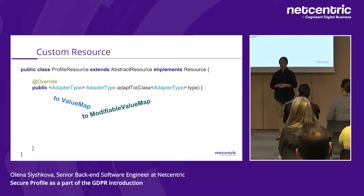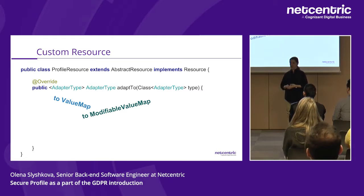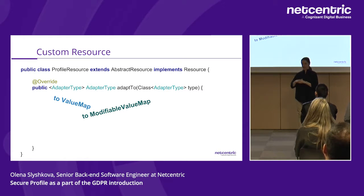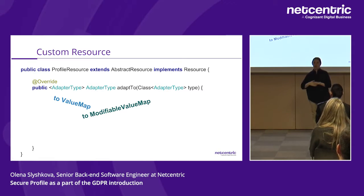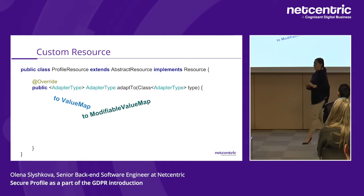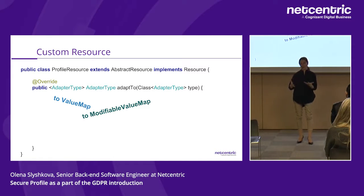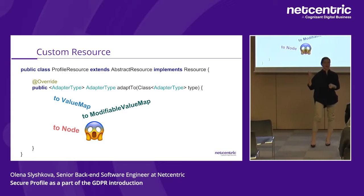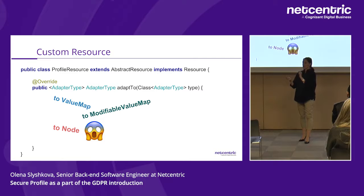The challenge lies in the adaptTo methods. Everything depends on how this resource is used in the client implementation — in our case, the community components. Unfortunately, some client code goes below the Sling level and starts working at the JCR level, adapting the resource to a Node.